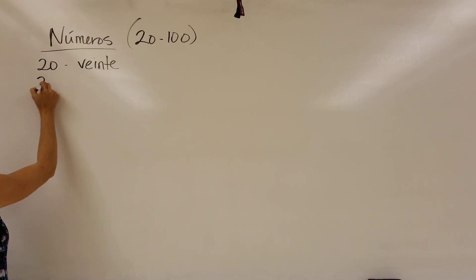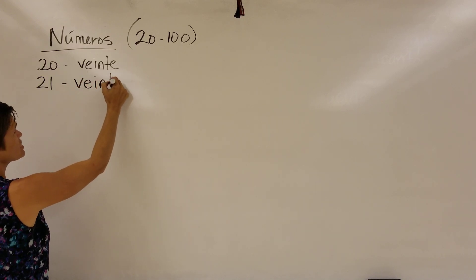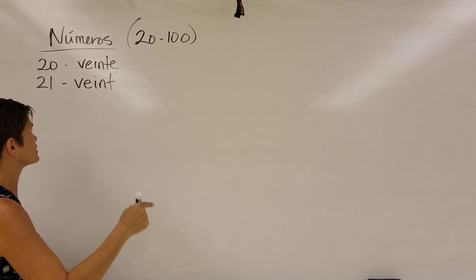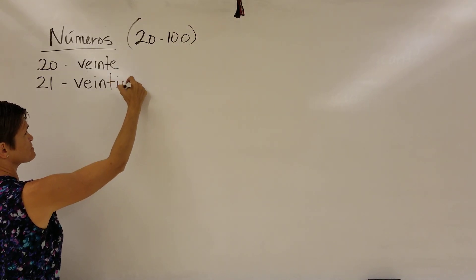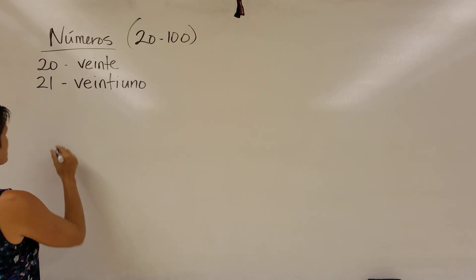But then once we get to 21, we're going to have to squish it together. So it was veinte, y, uno - 20 and 1. It becomes veintiuno. It gets squished together into a single word, veintiuno.